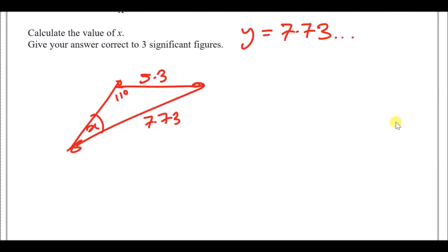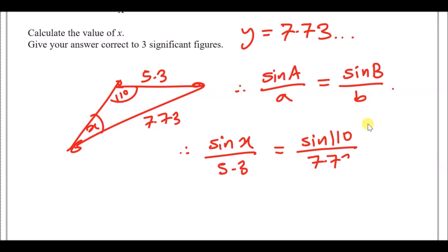Now, quick recap. Sine rule is also in the back of the book. It tells us that sine a over little a is equal to sine B over little b. We just match them up. So we're going to pick big A as x, which is going to match with little a 5.3. So sine of x over 5.3 is going to equal sine of 110 over its opposite length, 7.73.